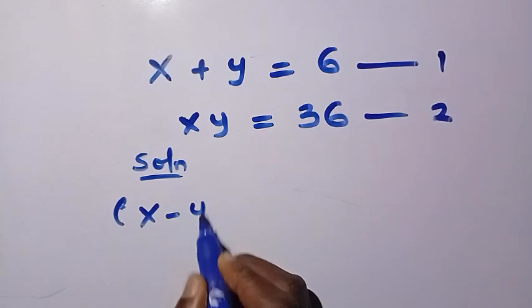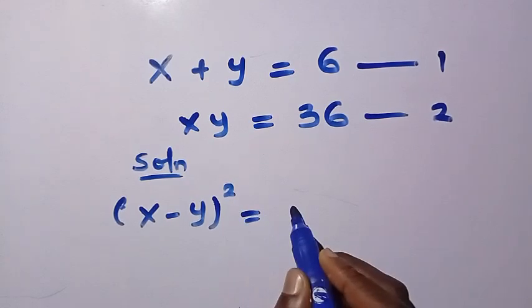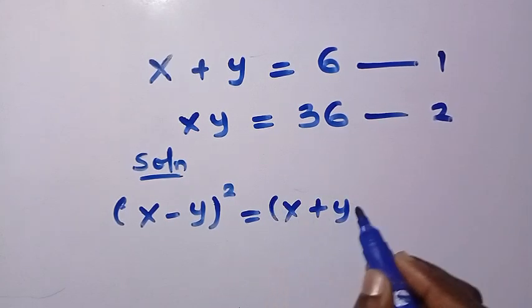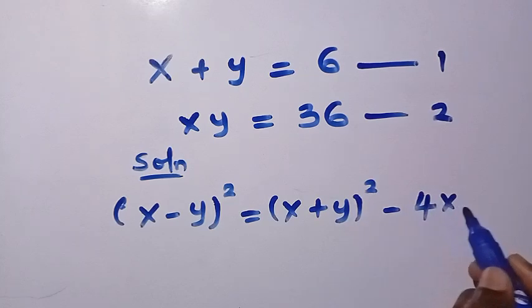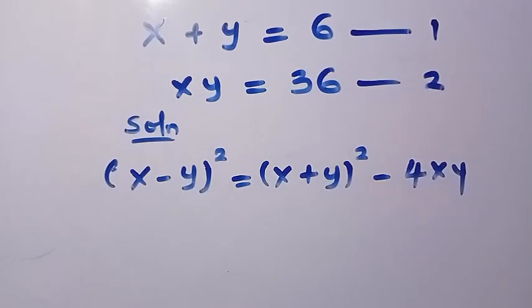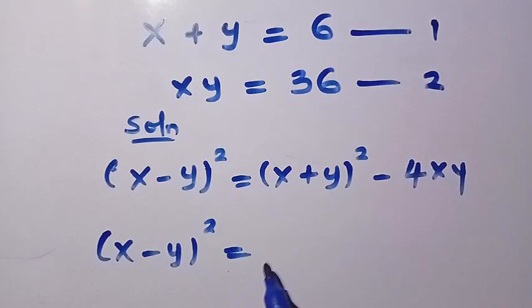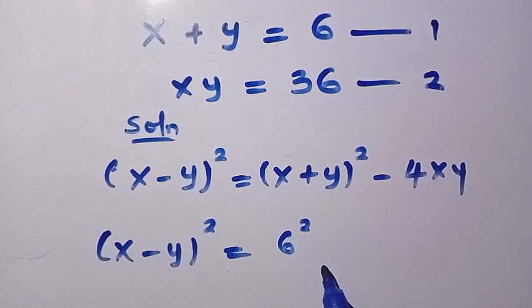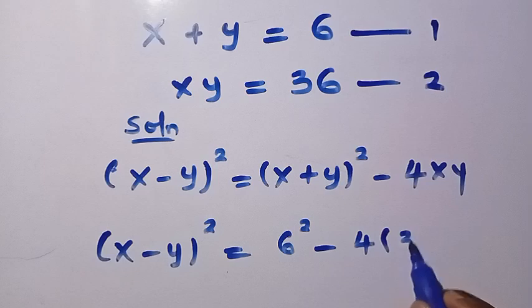We recall the identity: (x minus y)² equals (x plus y)² minus 4xy. Substituting our known values, we write (x minus y)² equals 6 squared minus 4 times 36.